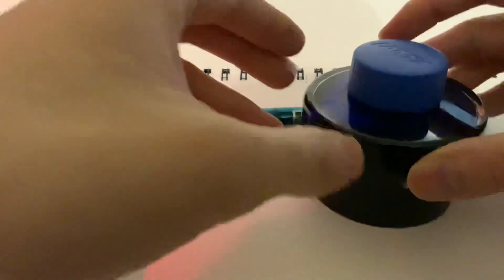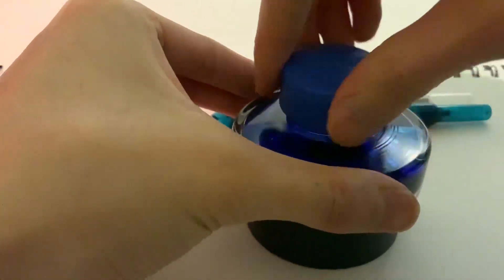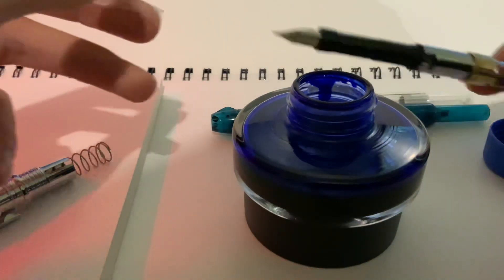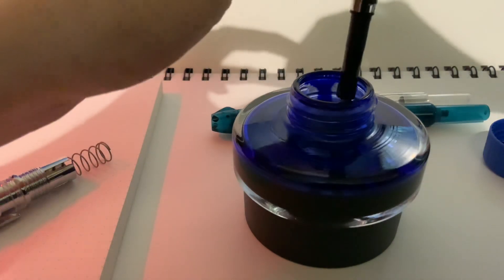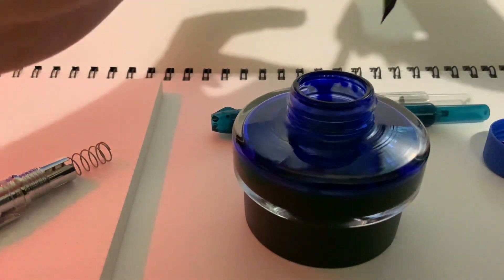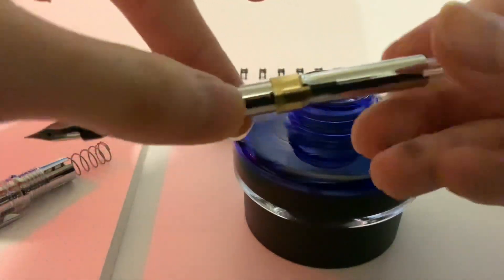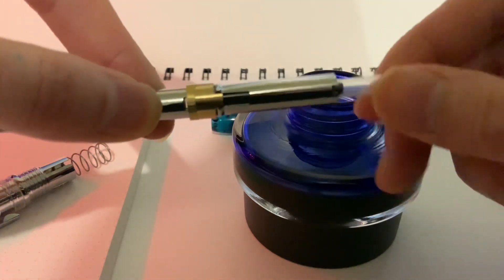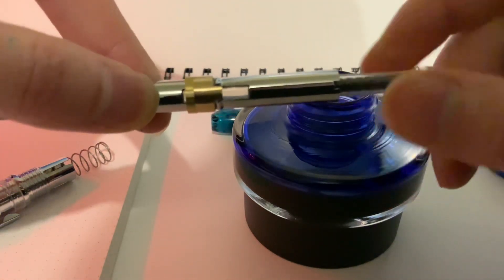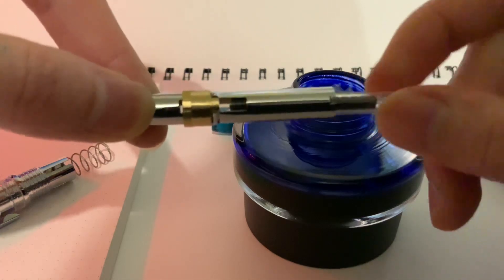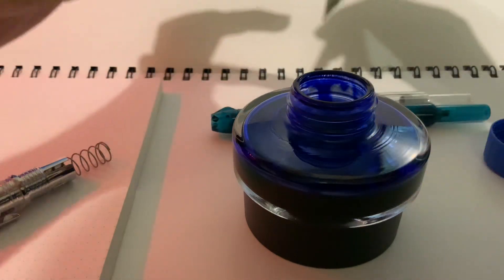Now you get your bottle of ink and simply do what you'd normally do. Dip it in and of course you can see here it just swivels to fill. So we'll just fill this one.